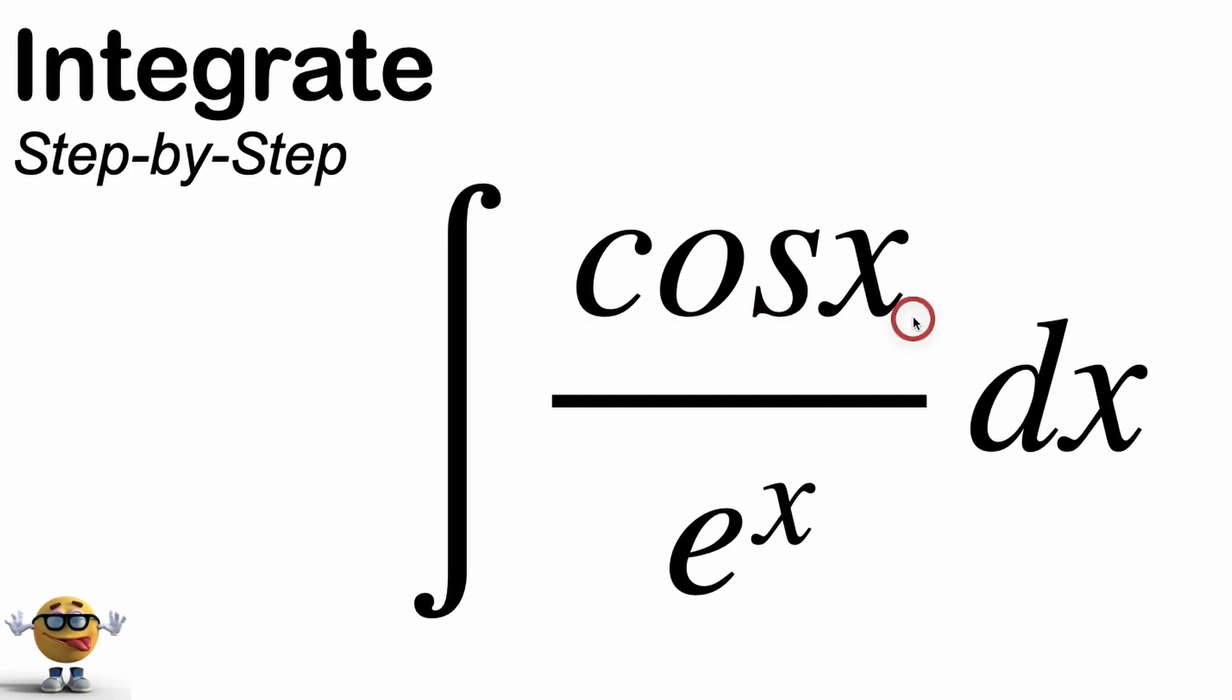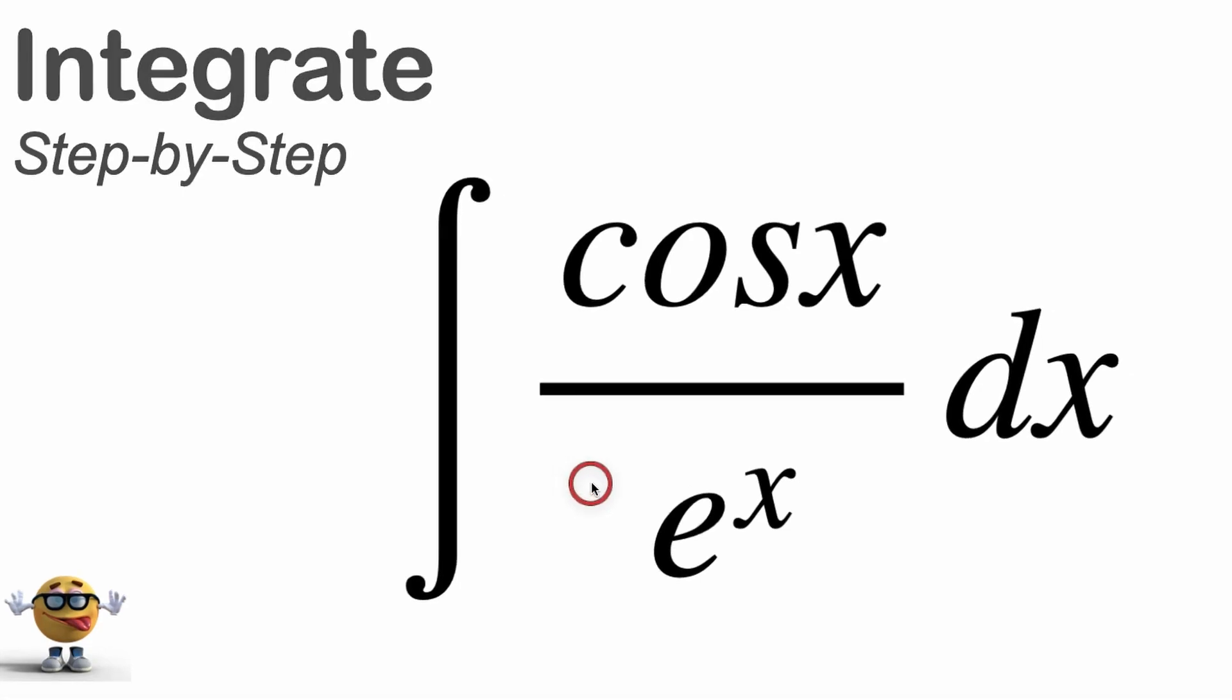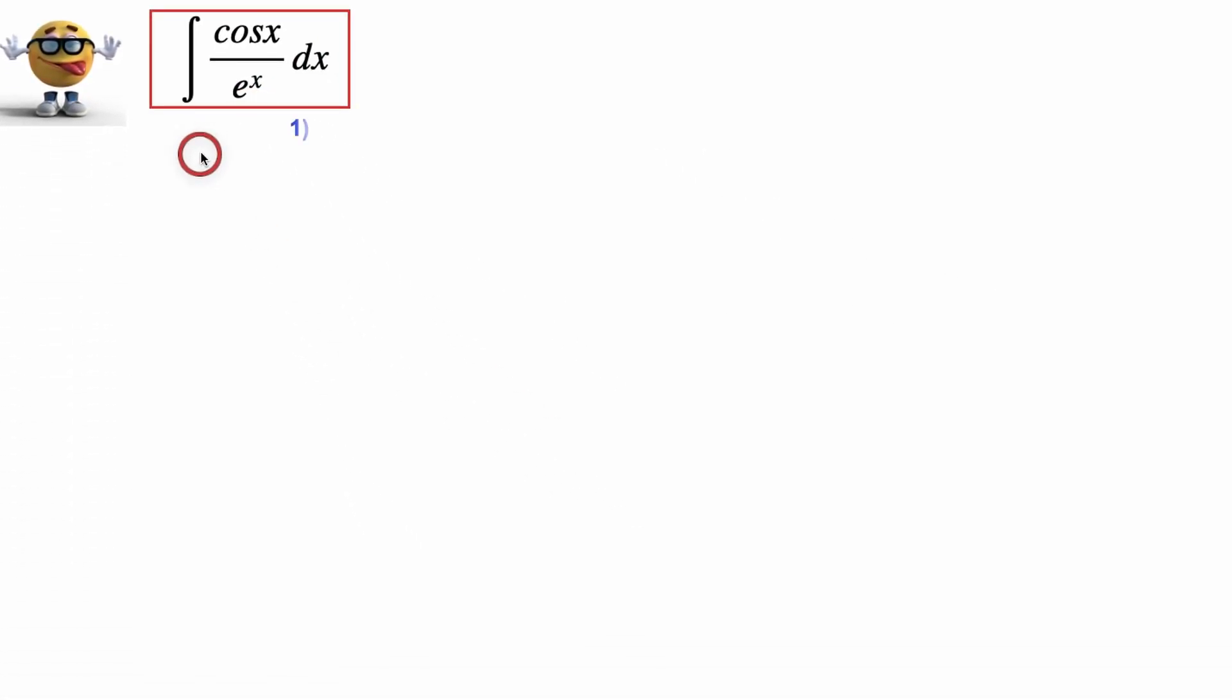We're going to evaluate the integral of cos x divided by e to the x, and this is a tricky integral to do. We're going to do it using the most popular method, which is integration by parts. This isn't my favorite way to do this, but check out this method, see what you think, and then check out my favorite way, and then you can decide which way that you like better.